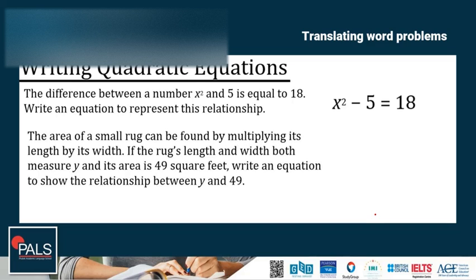Another example. The area of a small rug can be found by multiplying its length by its width. If the rug's length and width both measure y, and its area is 49 square feet, write an equation to show the relationship between y and 49. If the area is 49, then the basic form of the equation will be area is equal to 49. The area can be found by multiplying the length by the width, which are both y. Therefore, the area is equal to y times y is equal to y squared. Plugging this into your original statement gives you the equation y squared is equal to 49.